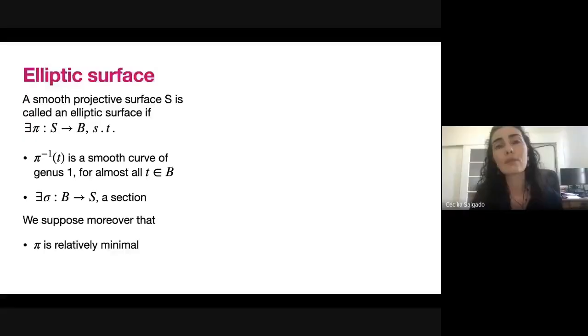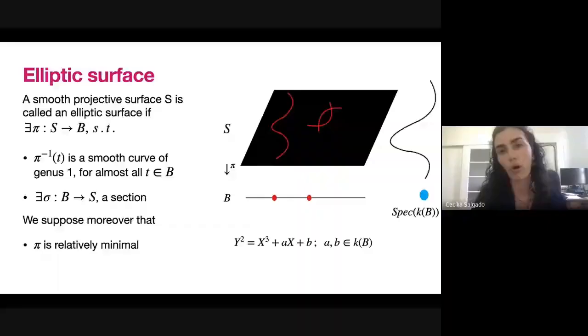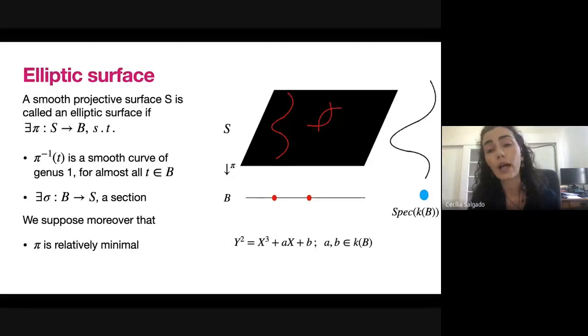To be clear, π being minimal does not mean the surface S is minimal; S itself can have (-1)-curves, just not inside the fibers. A picture: I have the surface in black, B is my base curve — for this whole talk you can suppose B is just the projective line P¹. Above a point of the line I have my fiber, which is normally a smooth curve; above some points I have something singular. I drew the generic point in blue and the generic fiber just above it.